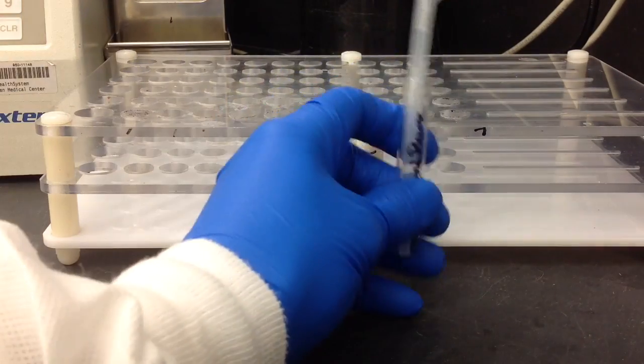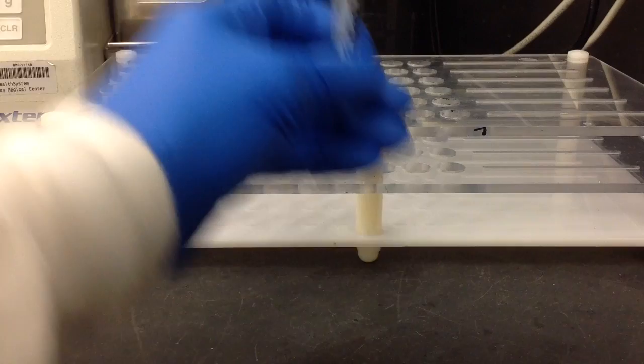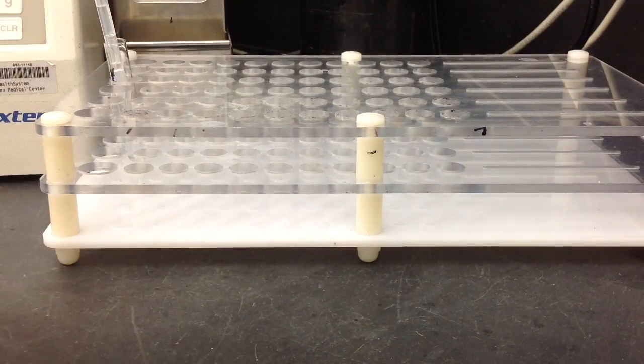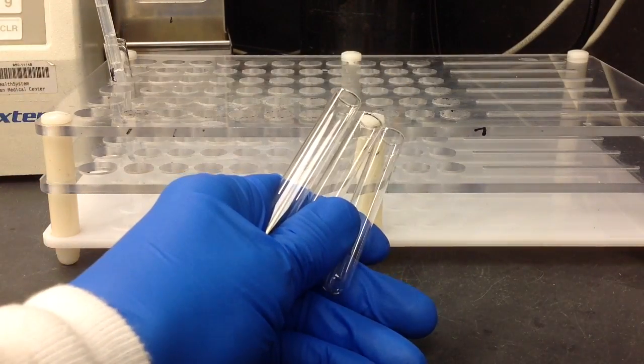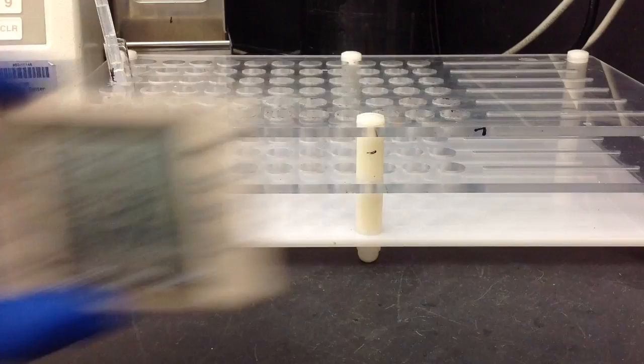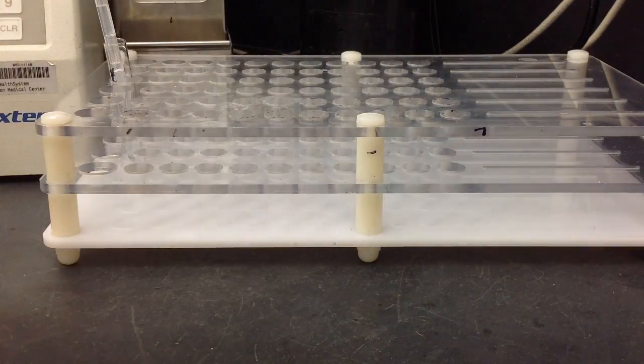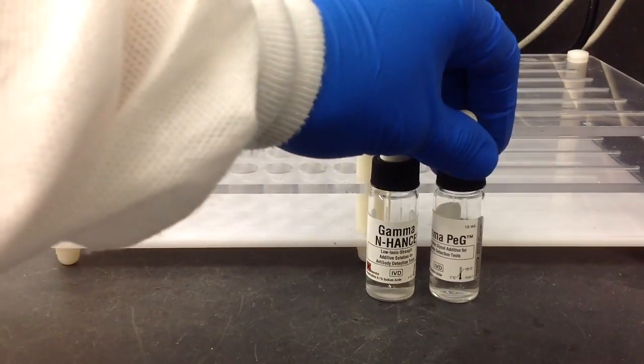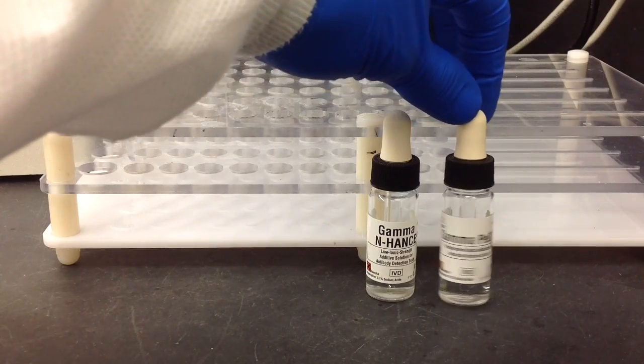...a patient specimen, some plasma. I'm going to be using physiological saline for my specimen. You're also going to need some tubes, a timer set for 15 minutes, some enhancer: LISS or PEG, whichever you choose. I'm going to be...